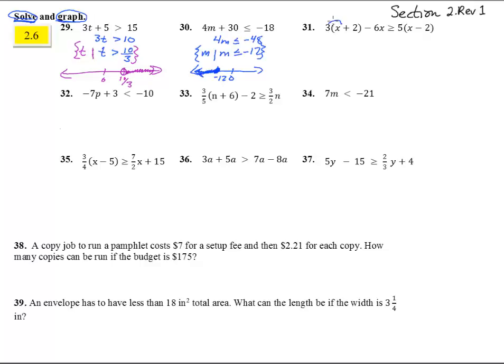Number 31. Let's get rid of all these parentheses. 3x plus 6 minus 6x greater than or equal to, jump that one in, 5x minus 10. So, this is really 6 minus 3x bigger than or equal to 5x minus 10.